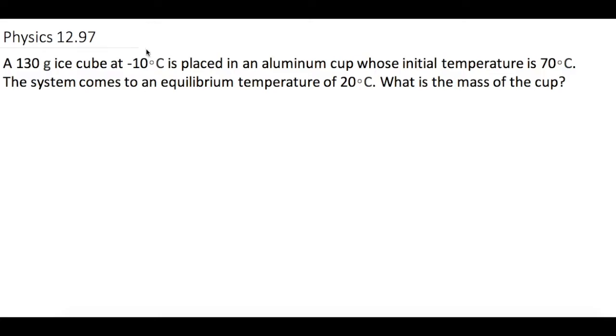So first off, let's draw a diagram of what's going on. We know that we have a phase change diagram. Down here, we're starting out with an ice cube at -10°C. So this is ice down here.